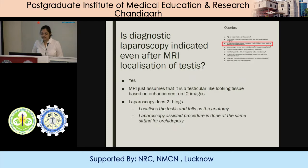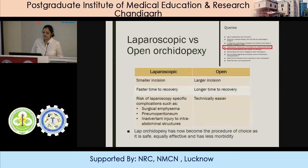Is diagnostic laparoscopy indicated even after MRI localization of testes? The answer is yes, because MRI just assumes that it is testicular-looking tissue based on the T2 enhancement. Laparoscopy helps in two ways: first, it localizes the testes and tells us the anatomy; secondly, a laparoscopy-assisted procedure can be done at the same sitting for orchiopexy. Regarding laparoscopic versus open orchiopexy for undescended testes, the indications for lap and open orchiopexy are entirely different.